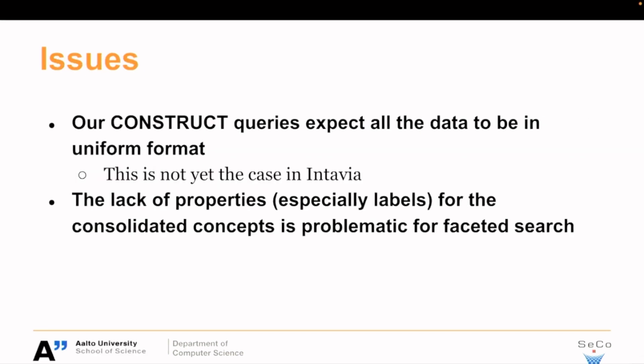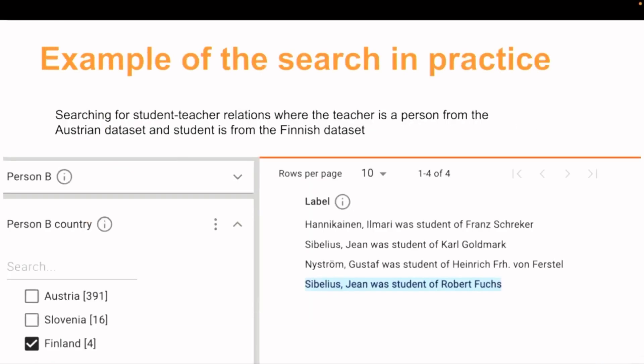There are currently some issues with Intavia where we have struggled a little. Our construct queries expect all the data to be in a uniform format, but this isn't really the case — there are a lot of issues in Intavia at the moment. It's a work in progress. Intavia is also currently missing labels and other properties for the consolidated entities, which is a problem for faceted search. We really need to create some kind of individual single labels from them ourselves. We have a working implementation at the moment, though not in good enough shape to open live. But I have a screenshot here as an example.